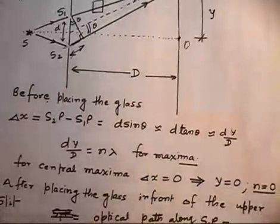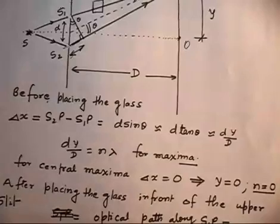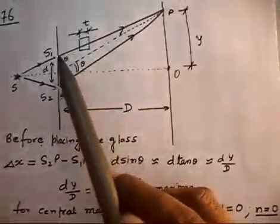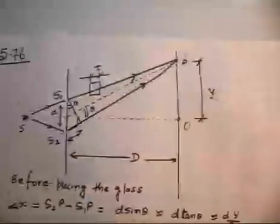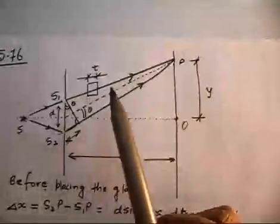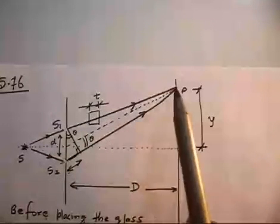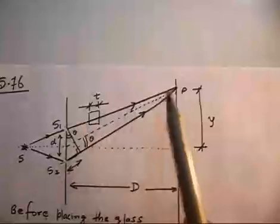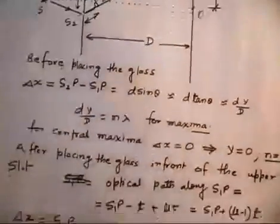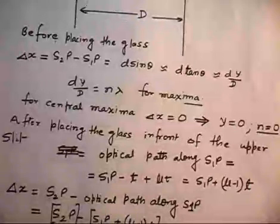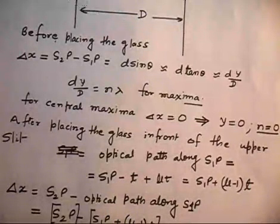Now, the second important point: if I place a glass slab in front of the upper slit — I can place it anywhere in the upper path, there is no difference. We now have to calculate the optical path along S1P after placing the glass. Write this out and then we will discuss.